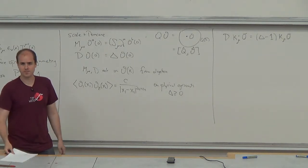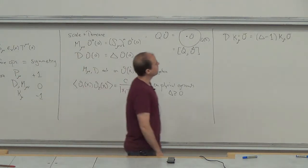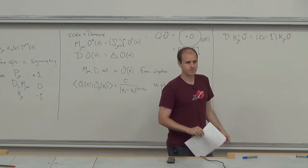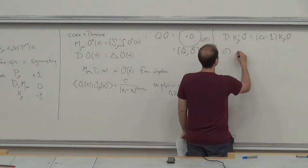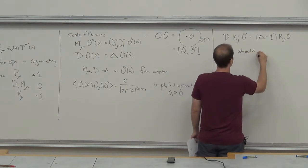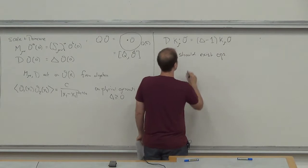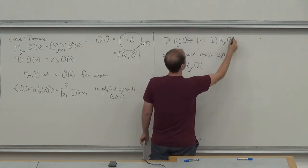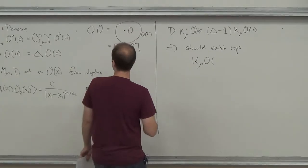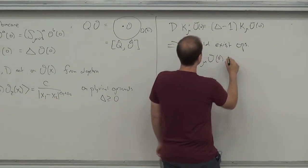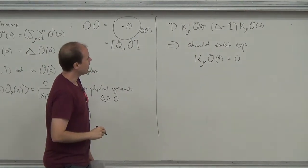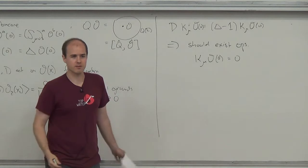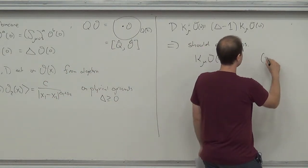So delta should be positive. But on the other hand, we have a symmetry generator that lowers delta. This means there should exist operators such that K_mu kills them — specifically, K_mu acting on the operator at the origin equals zero. If not, we could keep acting with K and decrease the dimension indefinitely, producing unphysical results. Operators satisfying this condition are called primary.